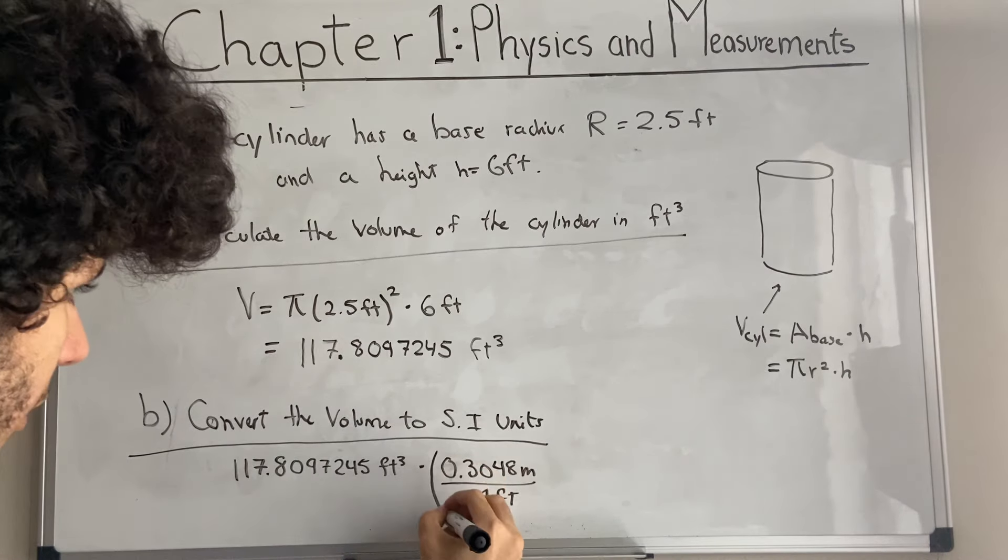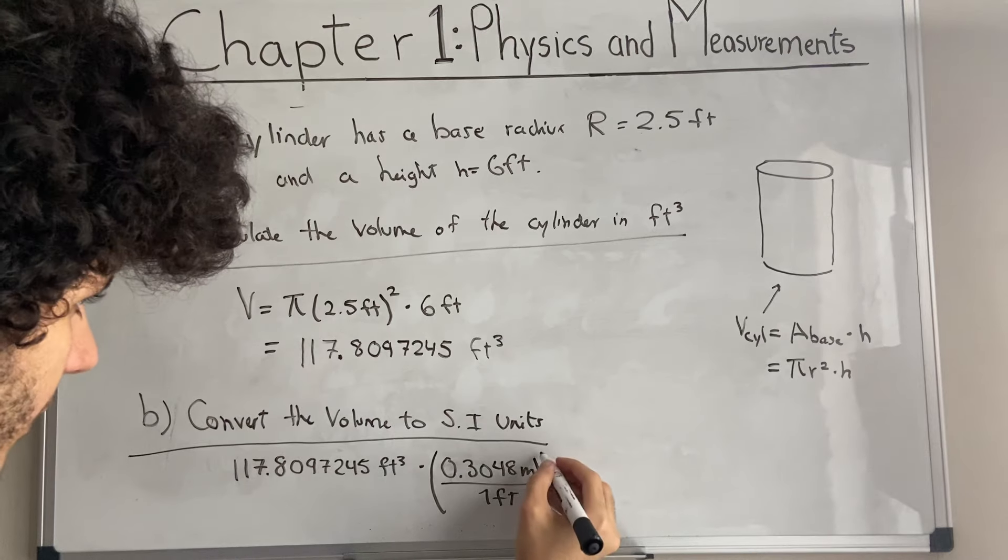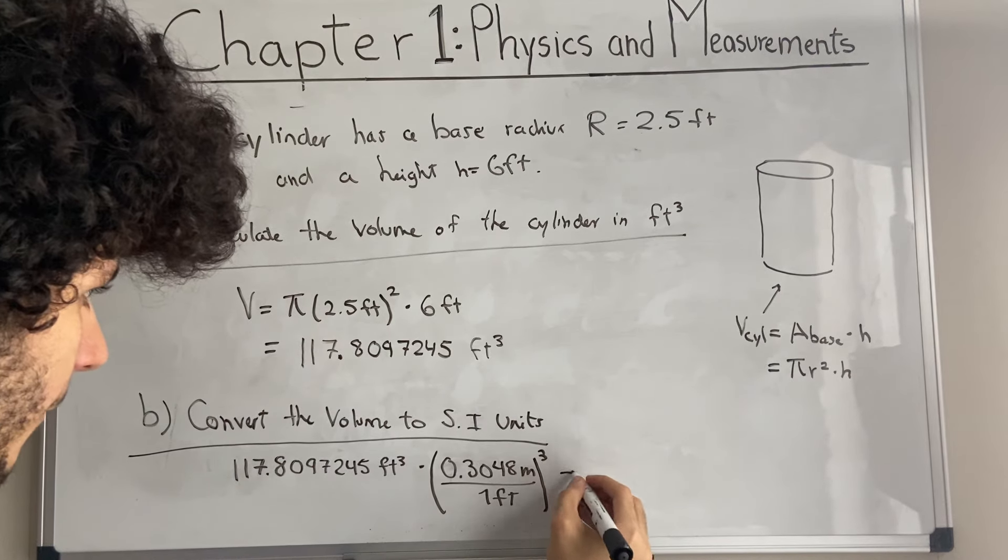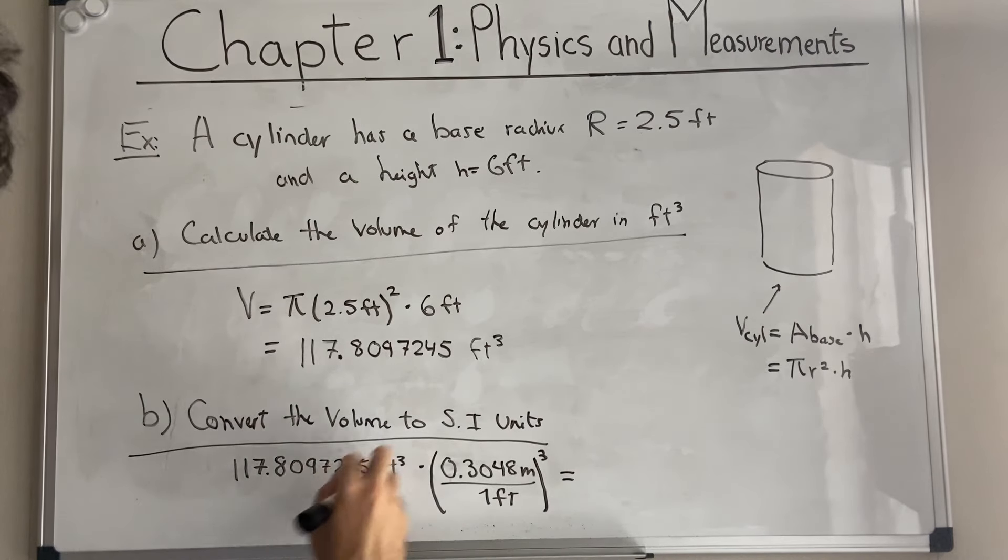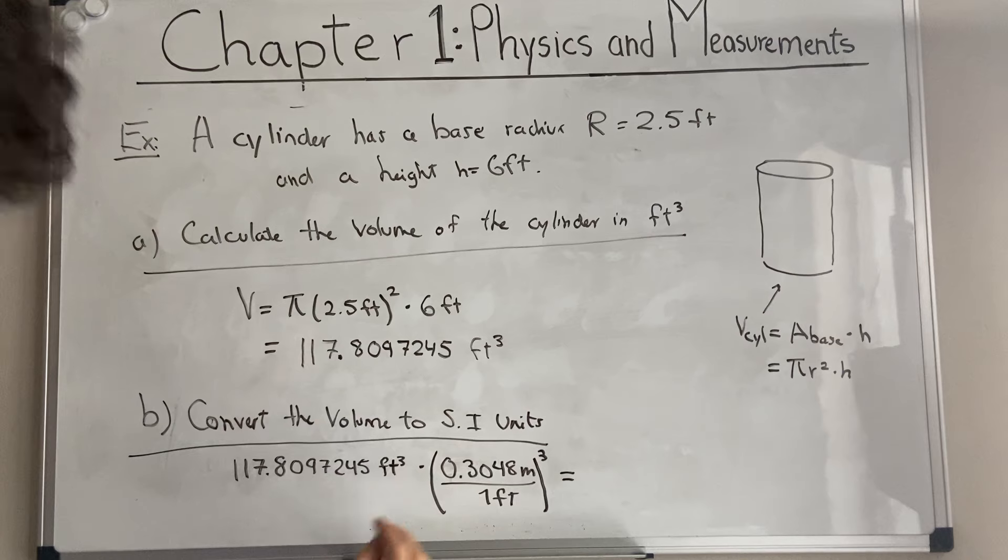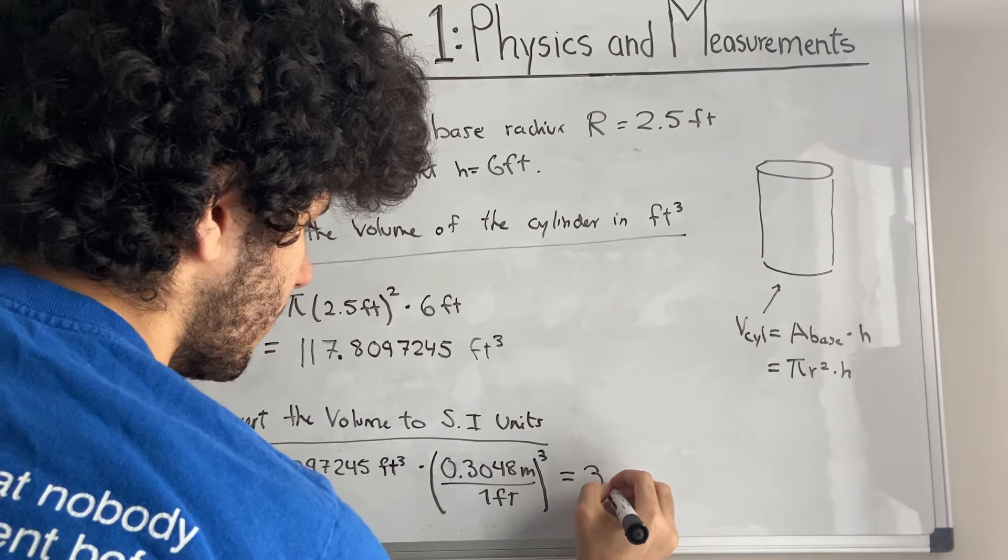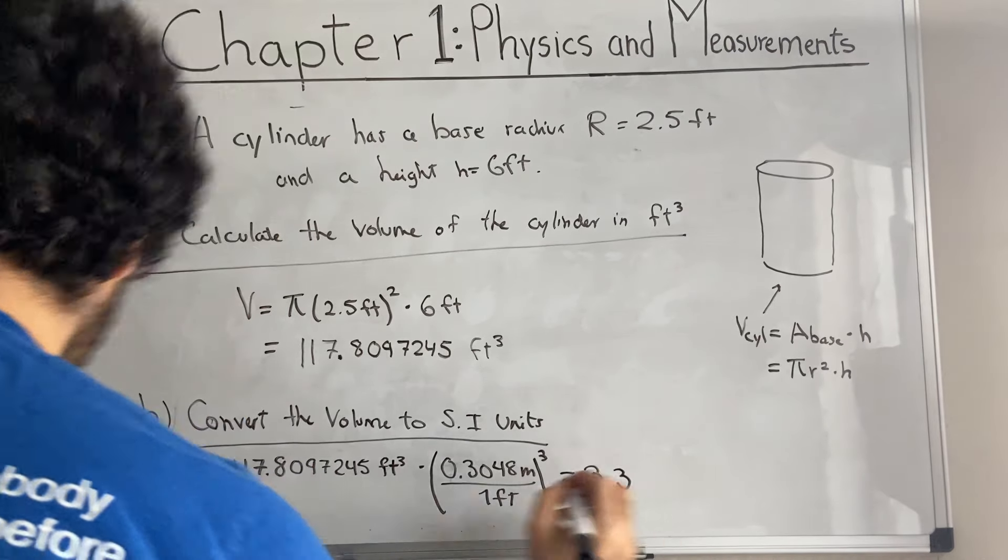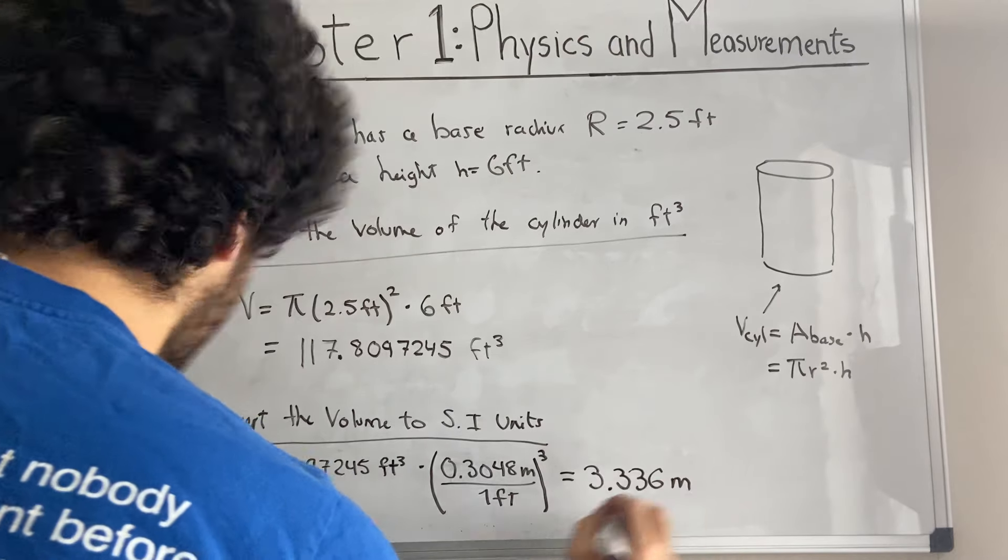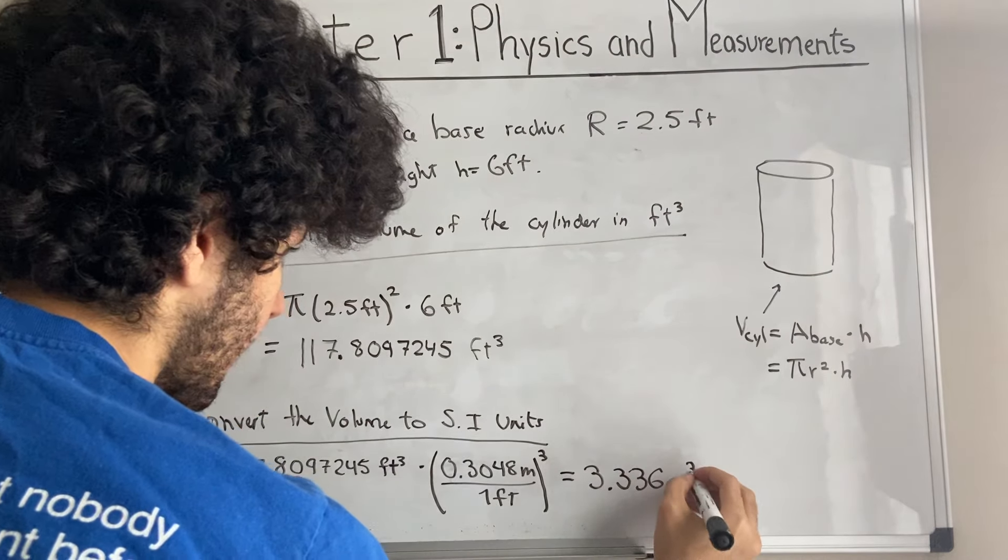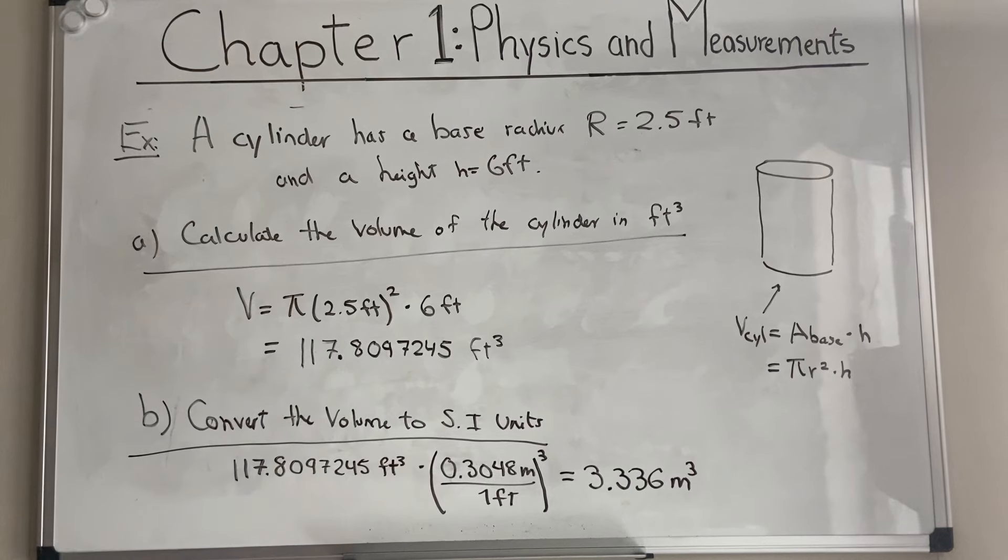What we need to do is actually cube this fraction, this conversion ratio. In that way, we'll have feet cubed and meters cubed. These will cross out, and we'll have meters cubed as a result. So when we do that, we end up with 3.336 meters cubed, of course, because we're dealing with a volume. So it's three-dimensional.